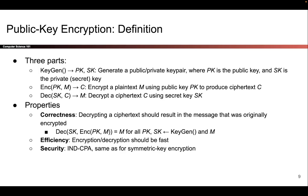Once you have the keys, anybody can encrypt a message. The encryption algorithm takes in a public key and a message, and it outputs a ciphertext. Because the input is the public key, anybody is able to encrypt a message. The decryption method, on the other hand, takes in a secret key and a ciphertext, and it outputs the original message. Because the decryption function takes in a secret key, only the recipient of the message — the person with the private key — is able to decrypt the message.